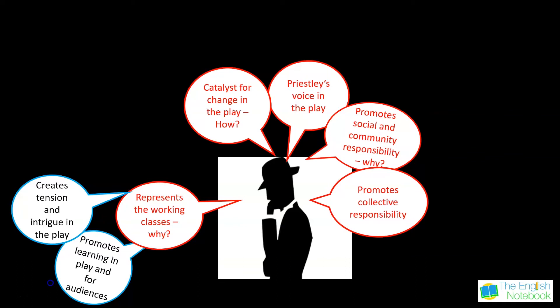He doesn't really care about how much wealth the Birlings have; he is not bothered by their display of power and self-importance in society. He questions them in a very intimidating way, which exposes their culpability. He is quite an omniscient character — he seems to know everything that has happened. The diary in the play is a dramatic device that gives him the authority and control he has. Priestley presents the Inspector as knowing far more than the other characters think he knows, and therefore they are quite intimidated.